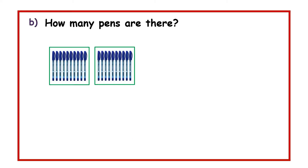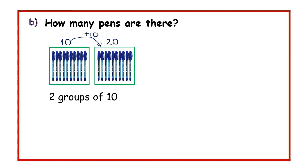This time around, we have got two groups, and one group has got 10 pens. So if we get 10 pens and we add another group of 10 pens, we will come up with 20 pens altogether. As we have seen in the first example, we can say we have got two groups of 10 — that is 2 times 10, which is equal to 20. So there are 20 pens altogether.